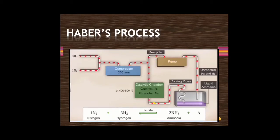To summarize Haber's process: hydrogen and nitrogen enter the compressor chamber and are compressed to about 150 to 1000 atmospheres. The main purpose is to compress the gases so the particles come closer together and can react.